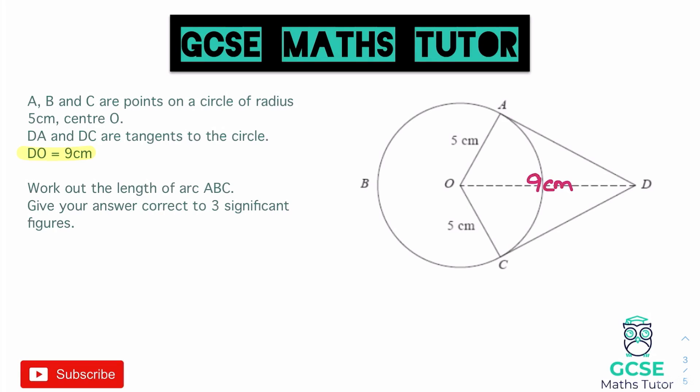Arc ABC is the large arc around the outside. To find the arc length we need the angle of the major sector. That quadrilateral is split perfectly in half to form two right-angle triangles. Those two right-angle triangles are congruent — the tangents are equal length, both have radius 5 centimetres, and both share the 9 centimetre line. So if we find the angle in one triangle we can double it and find the major sector angle.